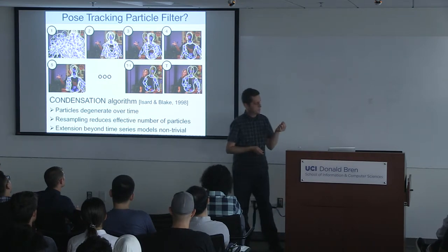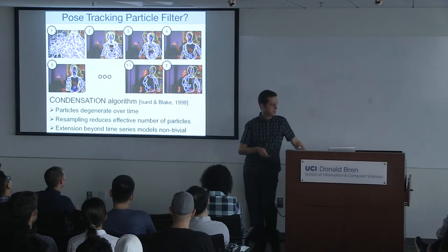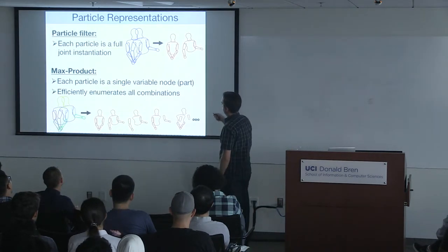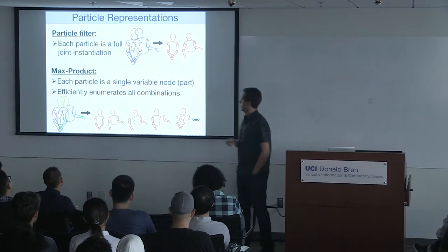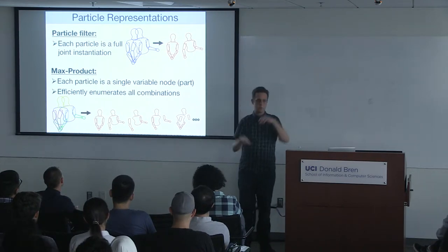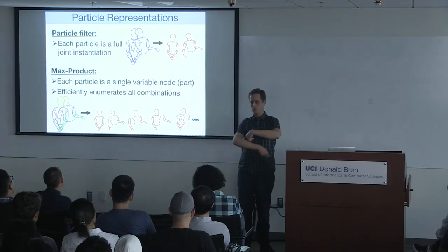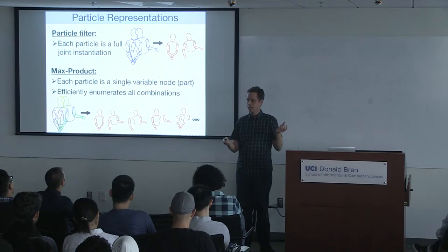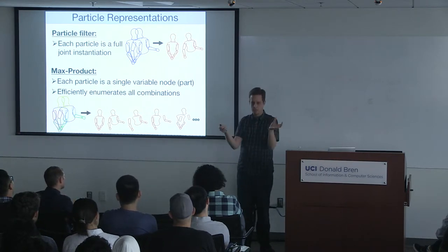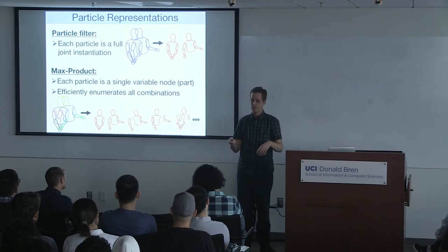The reason is that in a particle filter each particle is a full joint instantiation — one particle says the person is like this, another says they're to the right with arms changed. If you think about all the ways you could place a person and move each arm, the number of combinations is explosively enormous. If you have literally thousands of trillions of possible configurations and try to track with a thousand particles, you just can't fill that space.